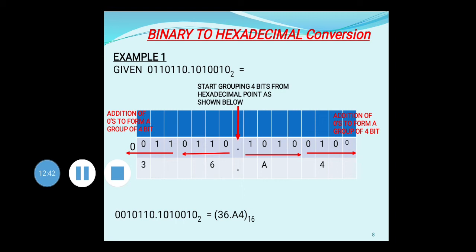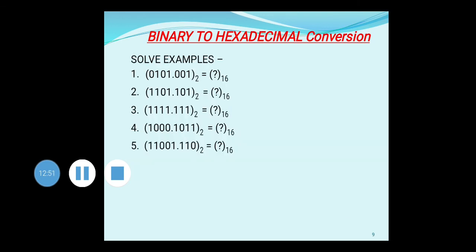I hope you have understood binary to octal conversion and binary to hexadecimal conversion. These are the examples to be solved for binary to hexadecimal conversion as an assignment. Thank you.